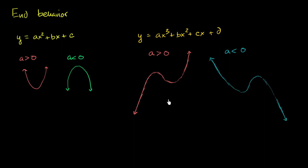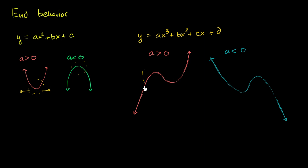When we talk about end behavior, we're talking about what does this polynomial do as x becomes really, really, really positive, and as x becomes really, really, really negative — fully recognizing that some weird things might be happening in the middle. We just want to think about what happens at extreme values of x. For a second degree polynomial, nothing really weird happens in the middle, but for a third degree polynomial, some interesting things can start happening in the middle.